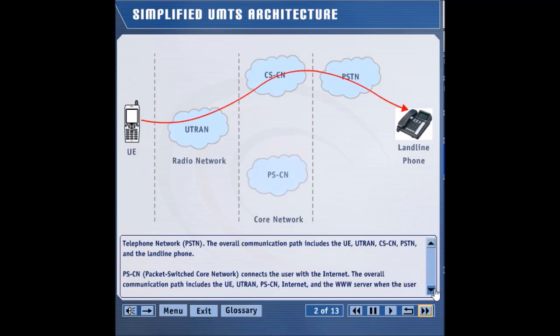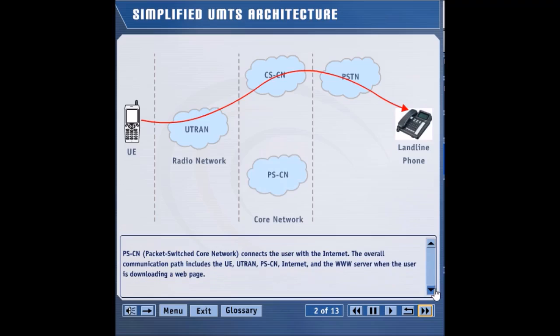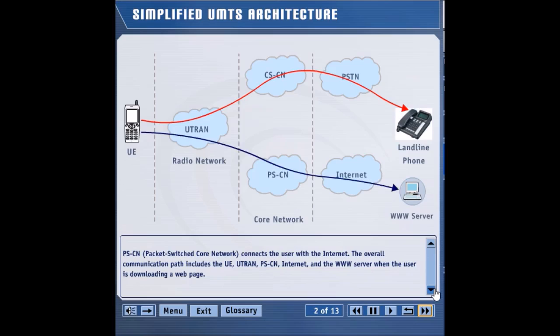PSCN, or Packet Switch Core Network, connects the user with the Internet. The overall communication path includes the UE, UTRAN, PSCN, Internet, and the WWW server when the user is downloading a web page.